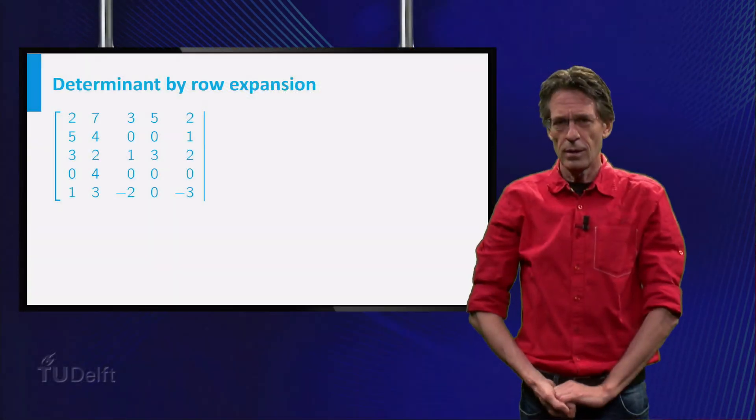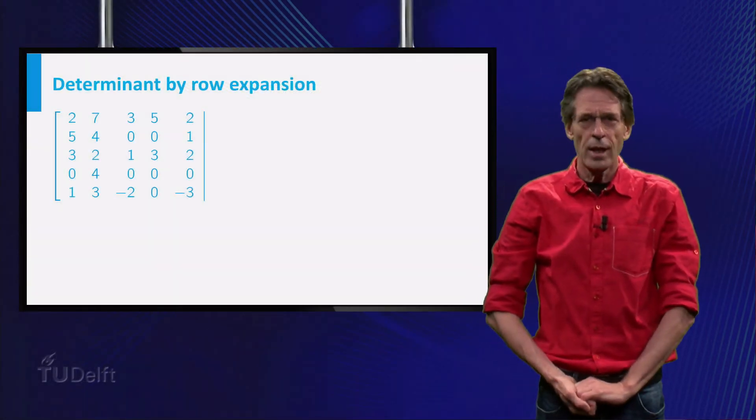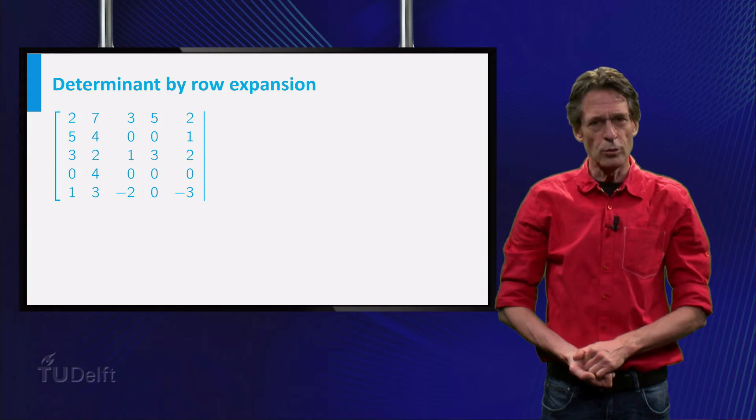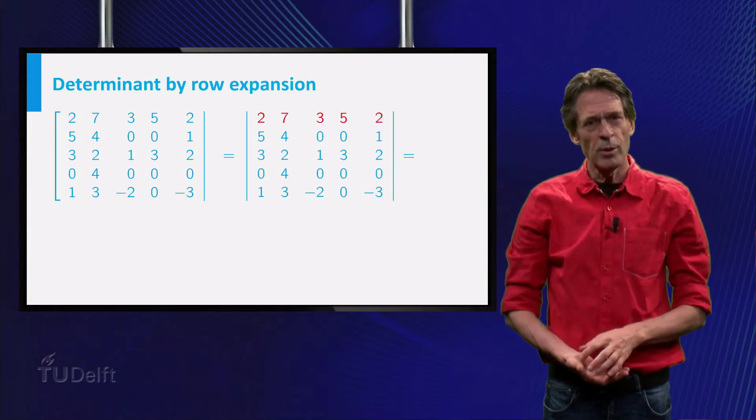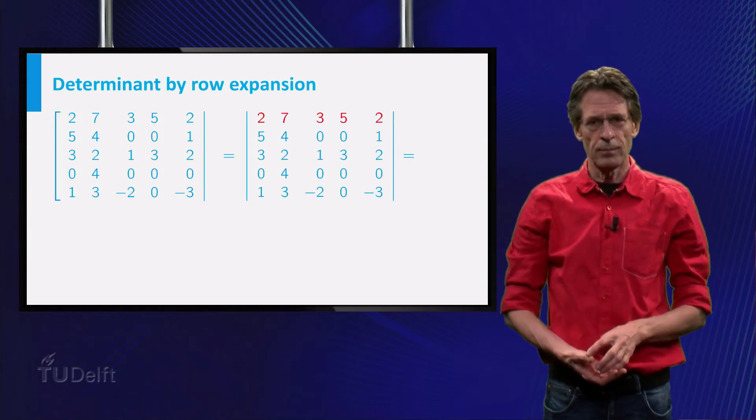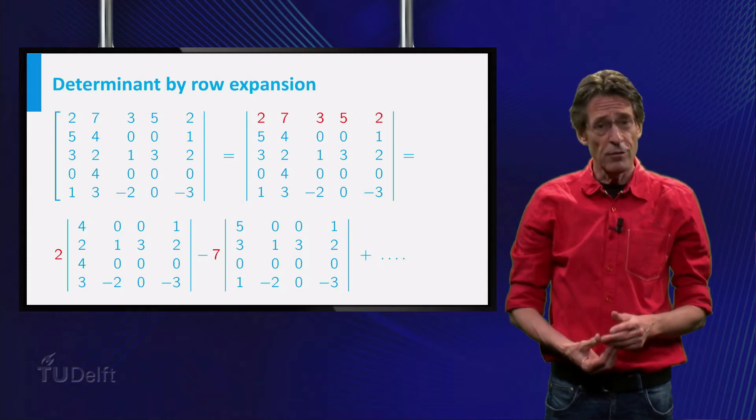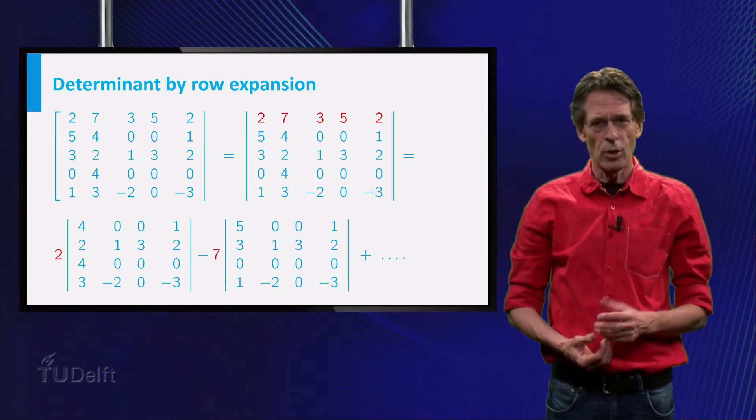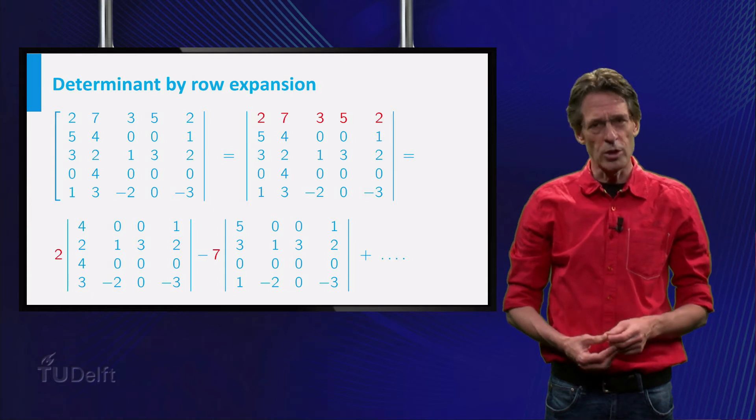So far the only instrument we have is the definition. If we want to find the determinant of, say, a 5x5 matrix A, like the one on the slide, and we just keep expanding across the first row, we will end up with a lot of calculations. After the first step we find 5 4x4 determinants, already too much to put on one slide.